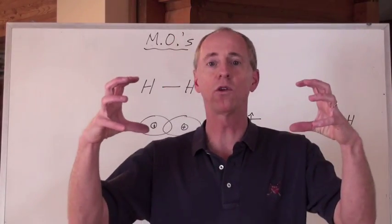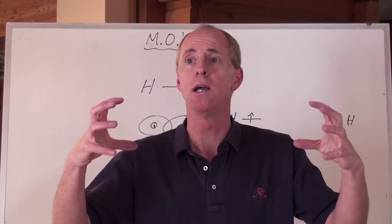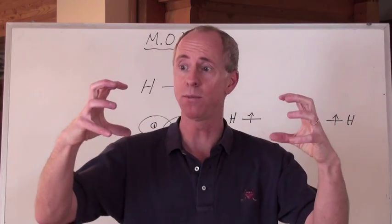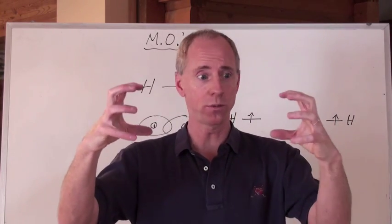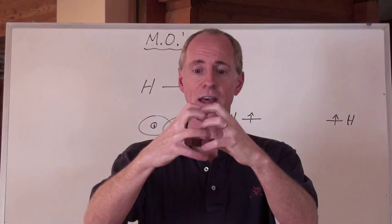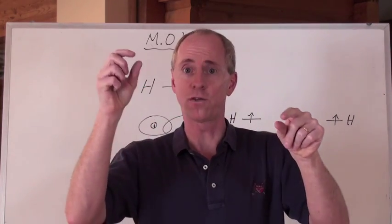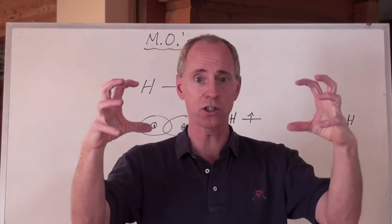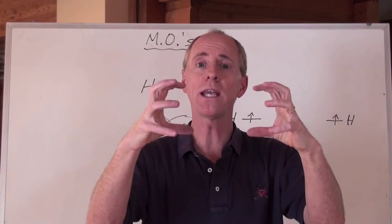If you've got those two 1s orbitals of hydrogen molecule - two hydrogen atoms coming together, right, and they've got 1s orbital, 1s orbital. When they come together, the electron from one hydrogen, the electron from the other one, where do they go again?